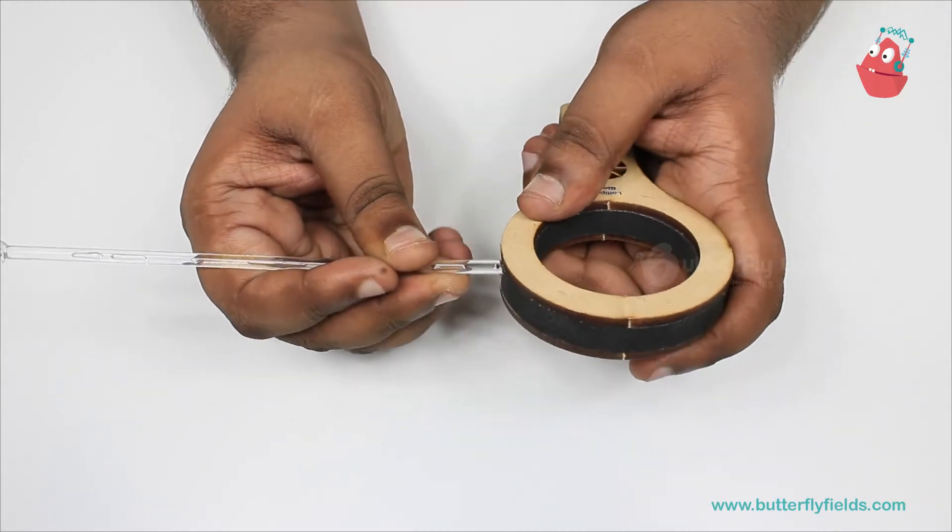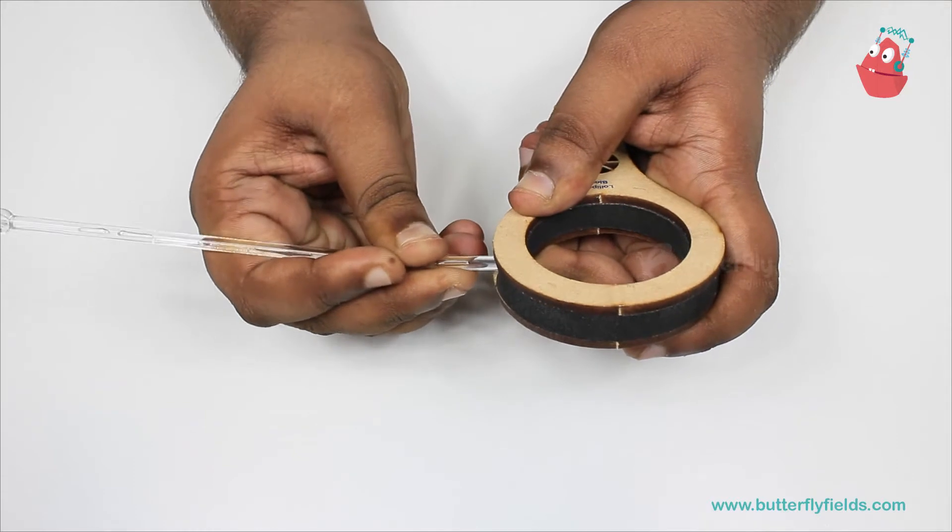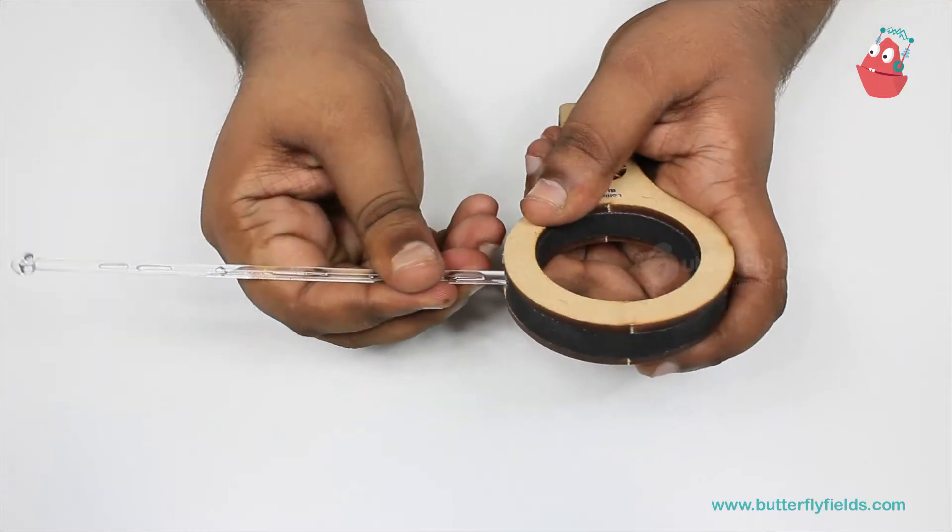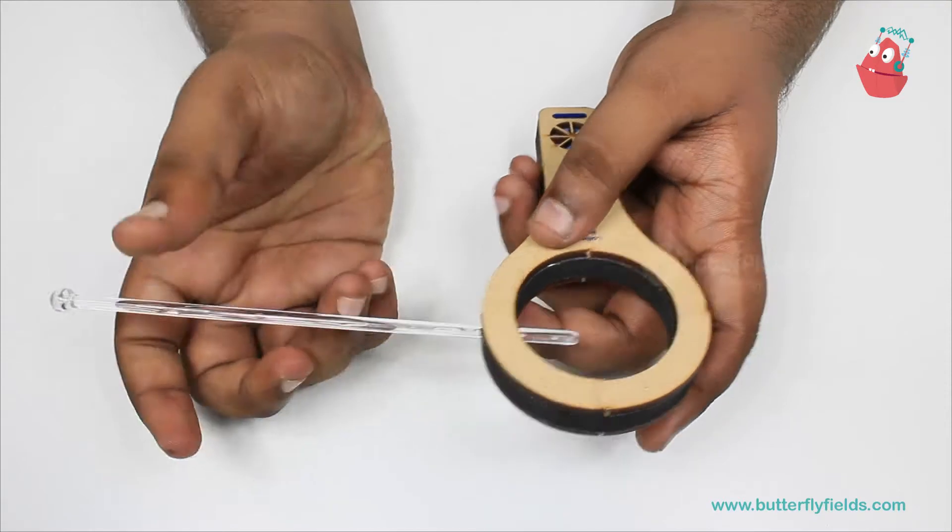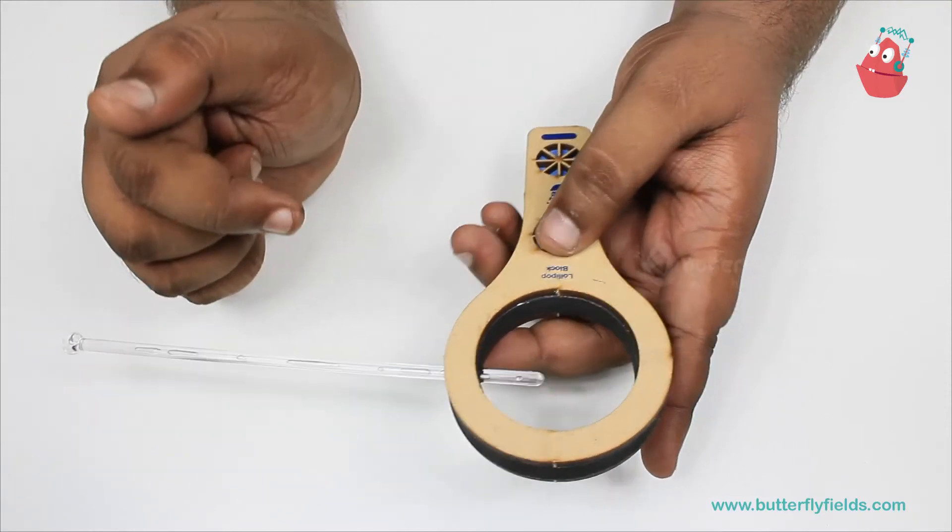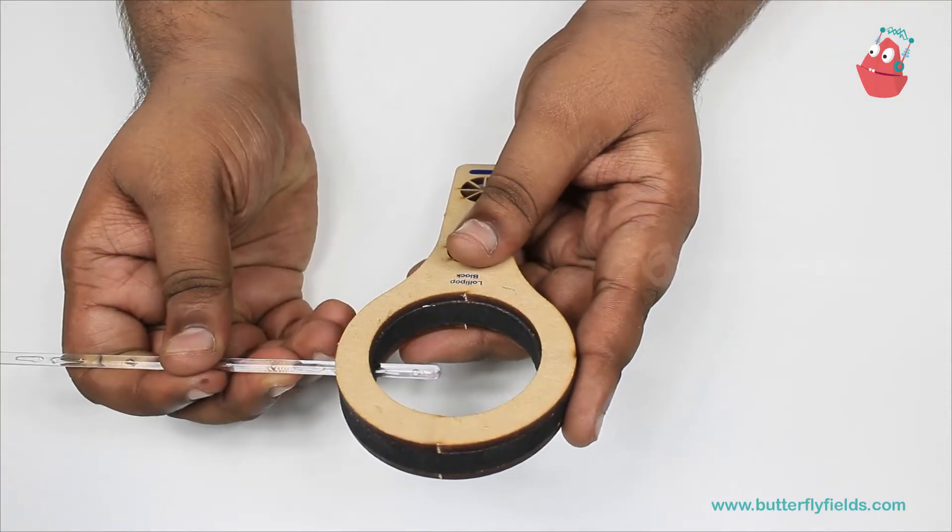And we can slowly push it inside. Once the straw is through from one side, take it straight and see that it is exactly in the middle.